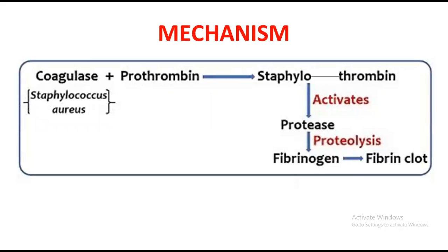The main mechanism is: when we have a sample of unknown bacteria with coagulase enzyme and apply it to a serum, there is a compound in the serum known as prothrombin. The coagulase binds with the prothrombin — here coagulase acts as an enzyme and prothrombin is its substrate. This complex is known as staphylothrombin, and because of this binding, prothrombin is converted into activated thrombin.